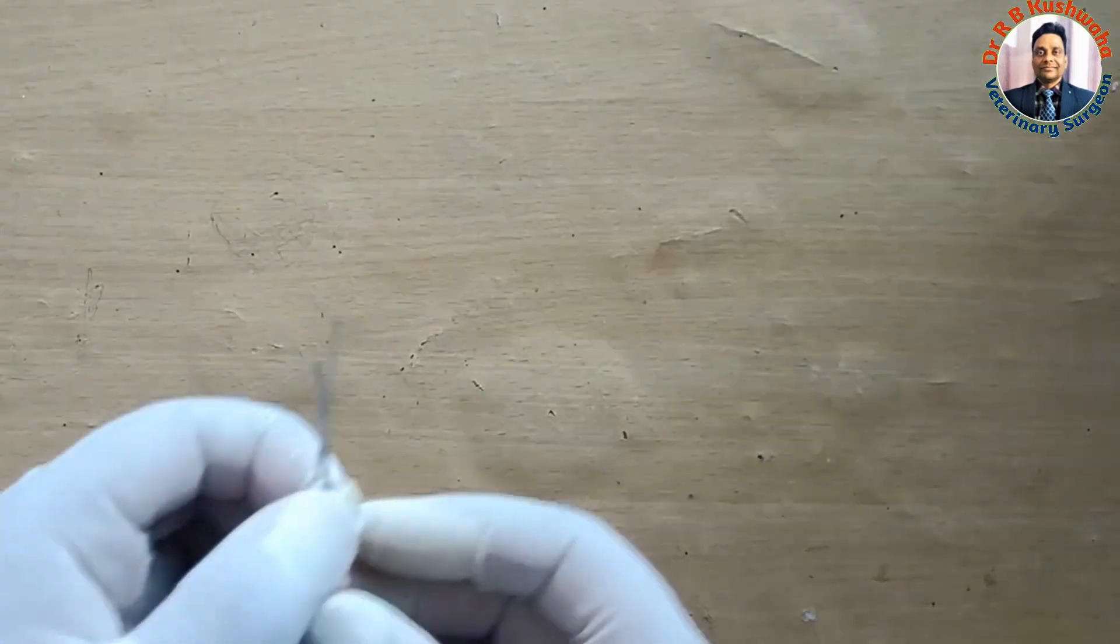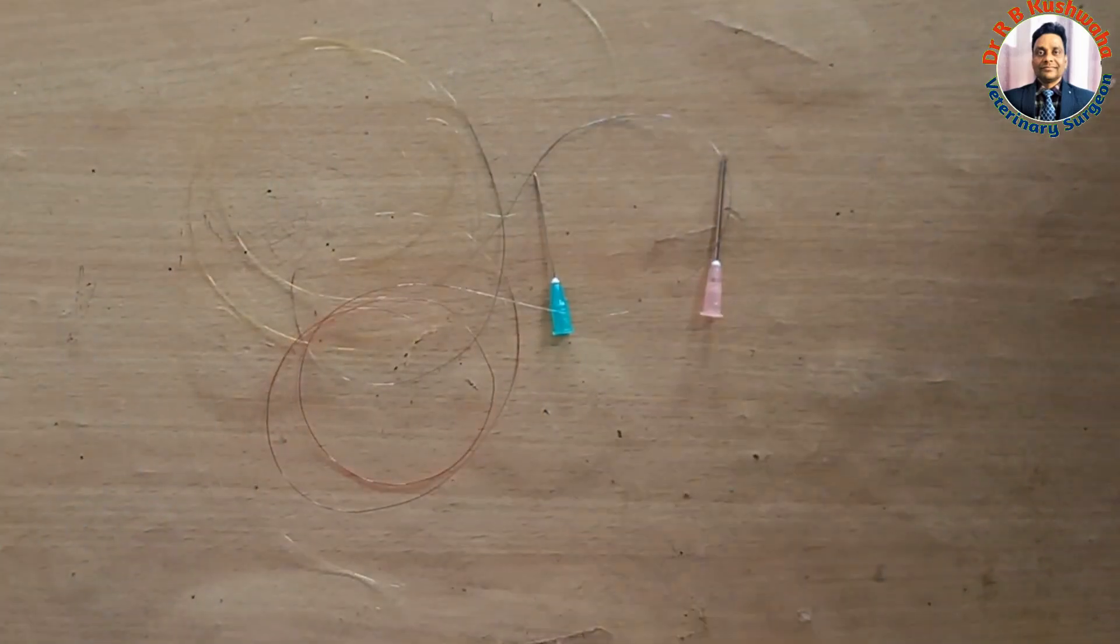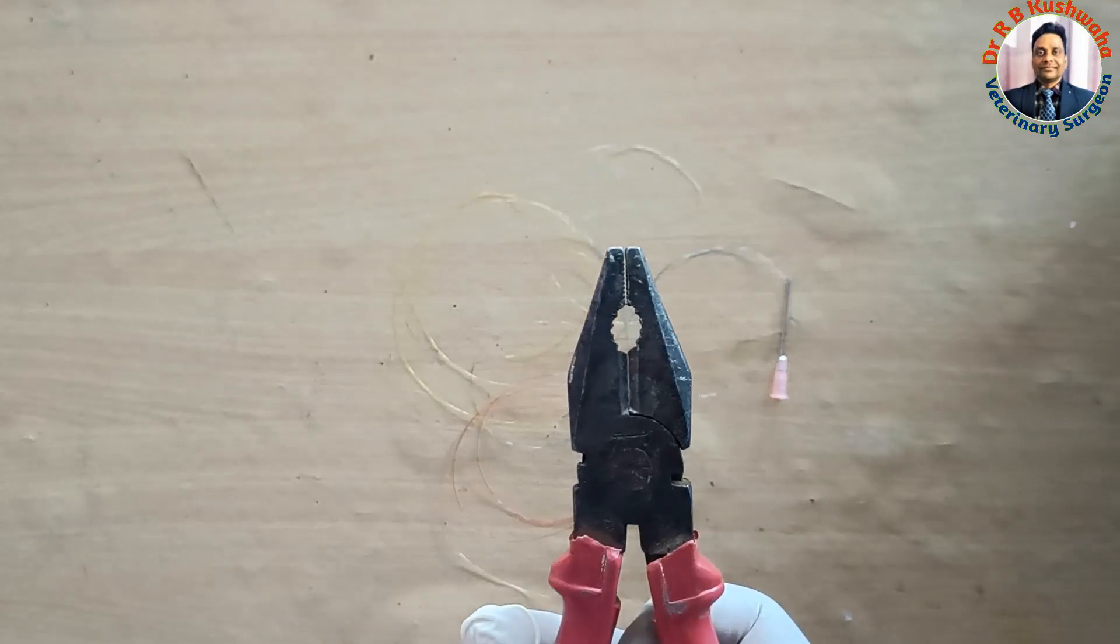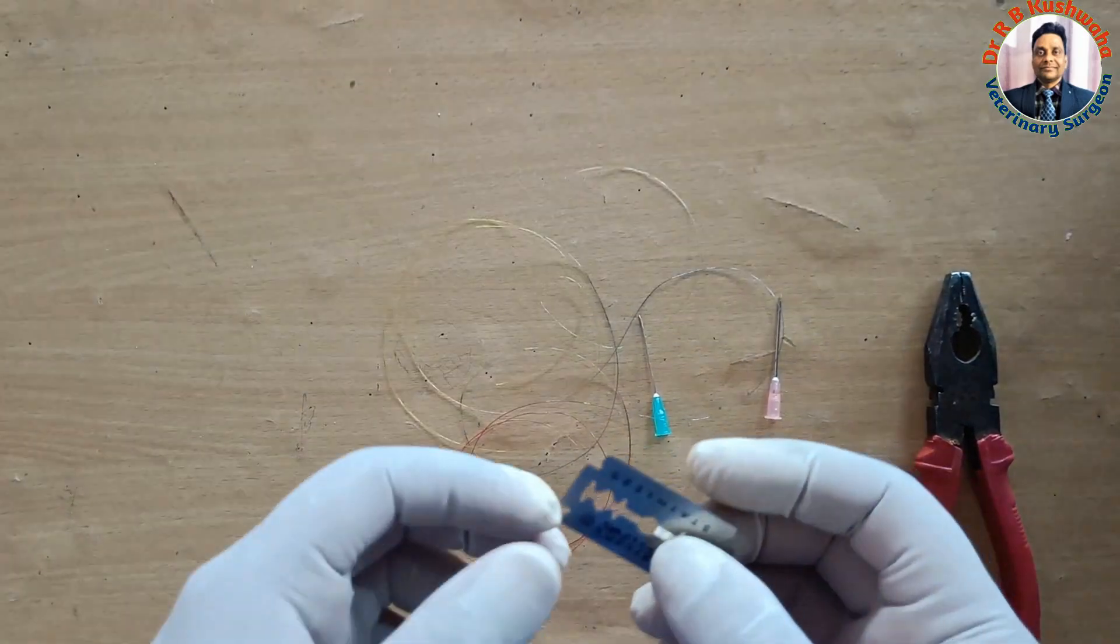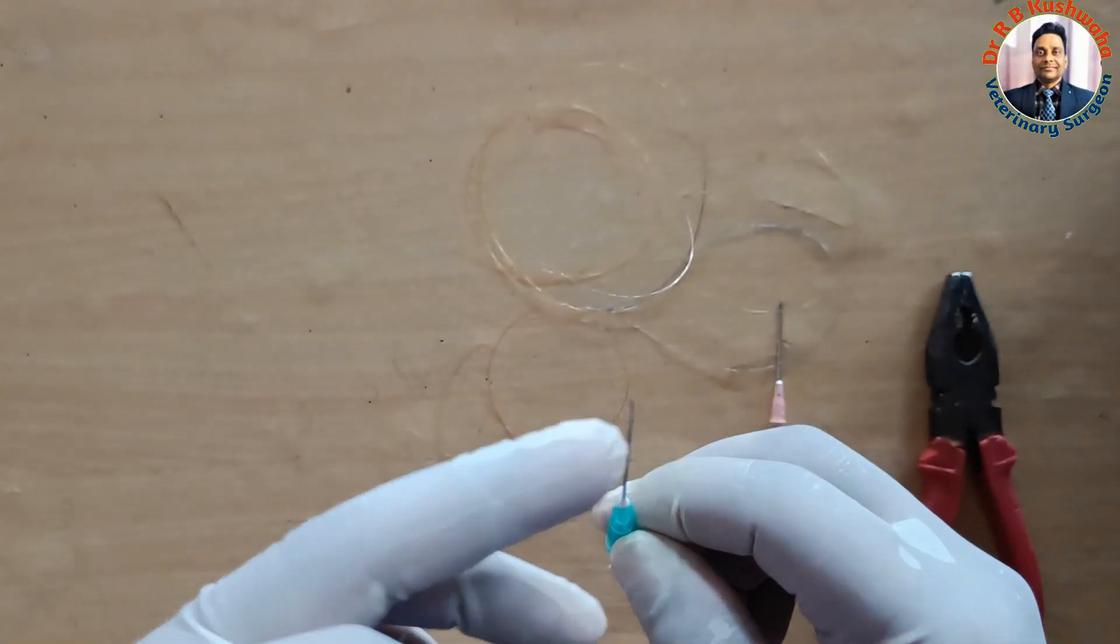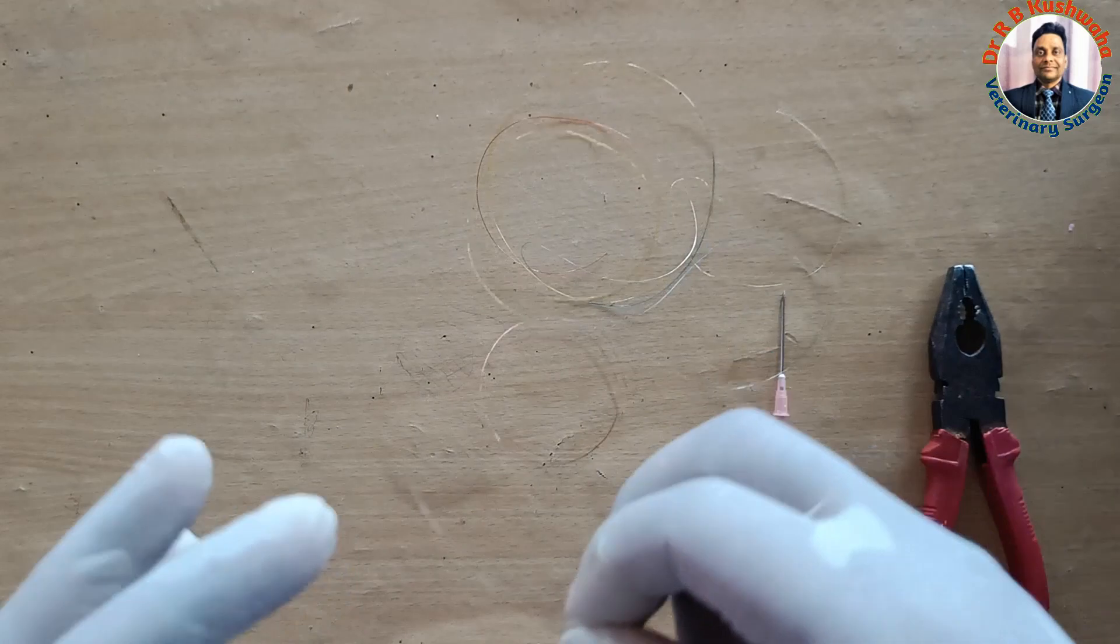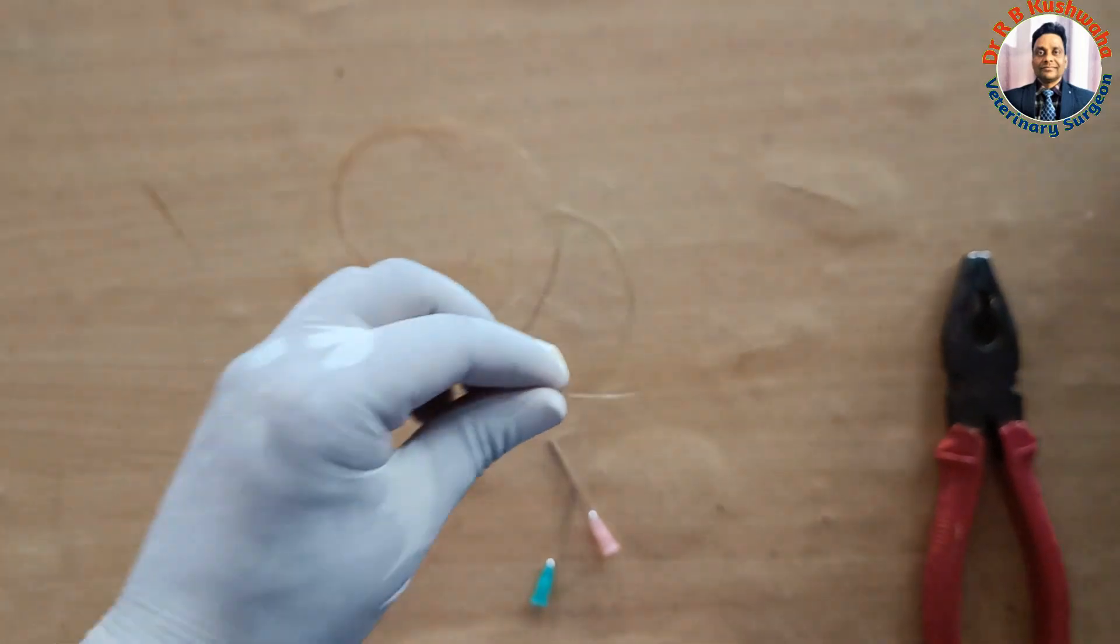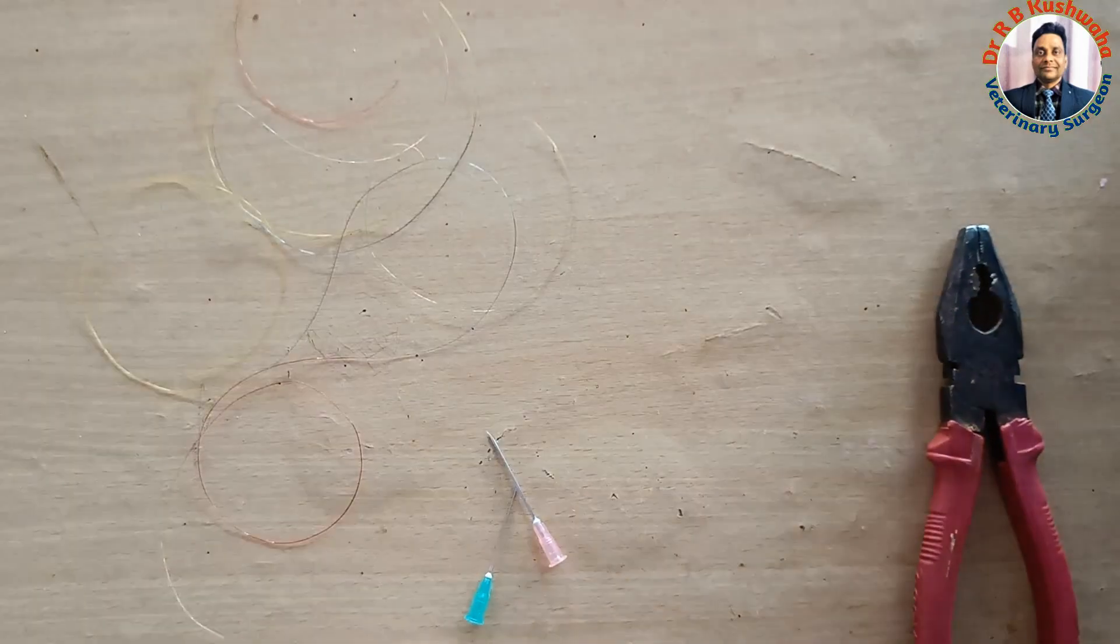The things required to make: obviously this hypodermic needle, then nylon thread, then to crush the shaft of the hypodermic needle we need a plier or you can also use any crushing instrument. Sometime the size of the thread is almost equal to the size of the internal diameter of the needle, so in that case if you cut the thread transversely it will not go. That's why it is recommended that whenever we cut this end of the thread, normally we cut with a slant just to make it easier.